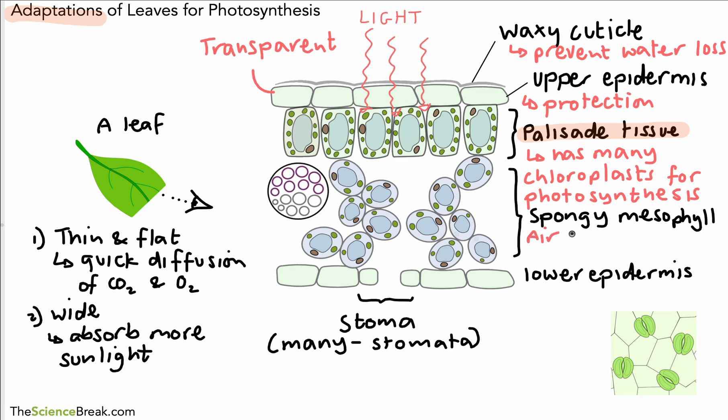We have the spongy mesophyll next, and the spongy mesophyll has air spaces. As you can see from the diagram, there's air spaces, and this is really important because the carbon dioxide can easily get to the palisade tissue, and oxygen can come through the air spaces and diffuse out of the leaf quite easily as well. So those air spaces are really important and these air spaces are found in the spongy mesophyll.